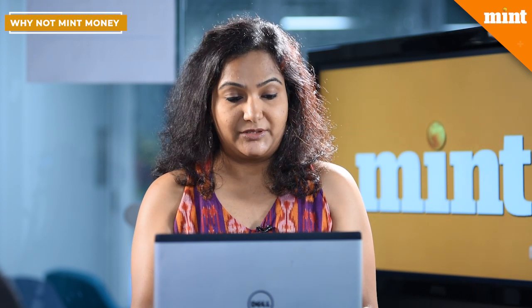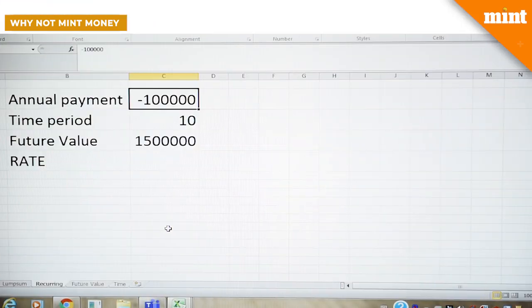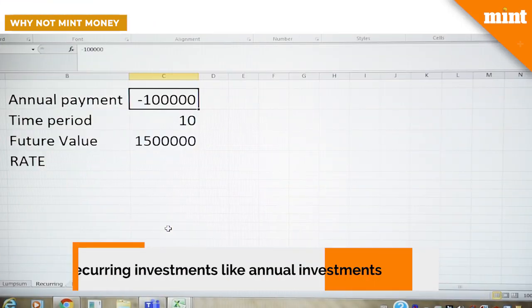Now this is a calculation that talks about a lump sum investment. What if you were making a recurring investment? Here I've already keyed in the data so that it's easier for us to calculate.